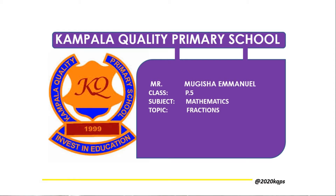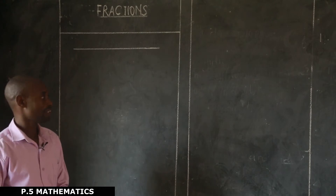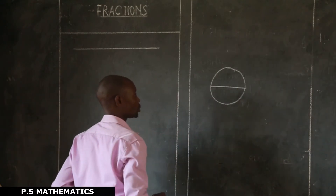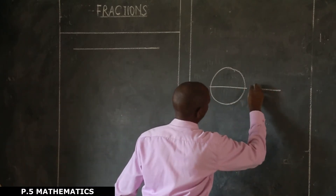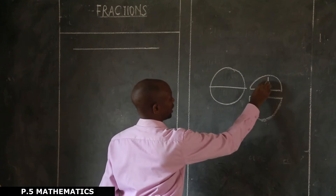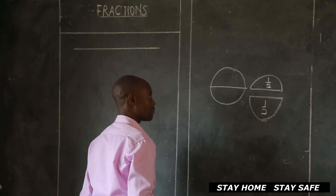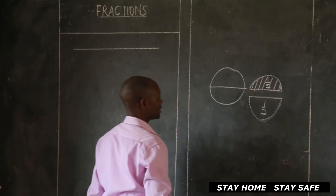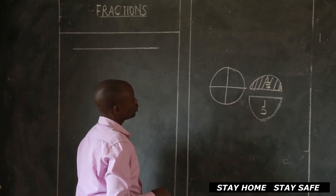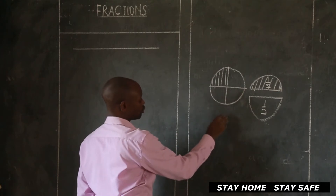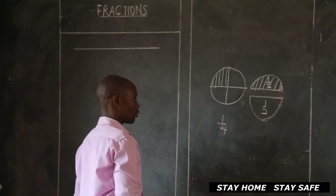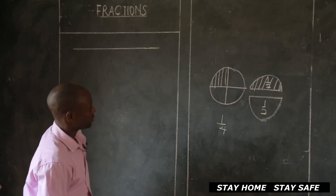So what is a fraction? A fraction is a part of a whole. If I have two whole numbers and I divide it into two, two parts will be formed. We call this one a half - even this one is a half. But if I divide it into four parts and I want one part, that is one out of four parts, so I get a quarter. That is the meaning of a fraction.